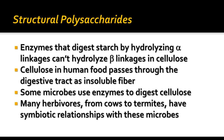The enzymes that break down starch differ depending on whether it's going to be alpha linkages or beta linkages. In your digestive system, you are not able to break down the beta linkages in cellulose, which is why the cellulose in your food passes through your digestive tract as insoluble fiber. Some microbes have enzymes that can break down cellulose, and herbivores like cows and animals like termites have a symbiotic relationship with these microbes, allowing them to utilize more of the nutritional value of cellulose. We don't have those enzymes — our enzymes hydrolyze alpha linkages rather than beta ones.